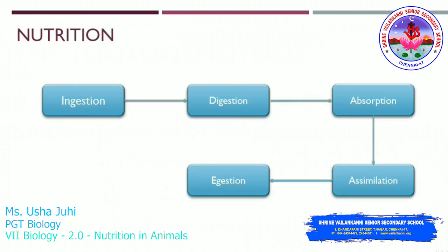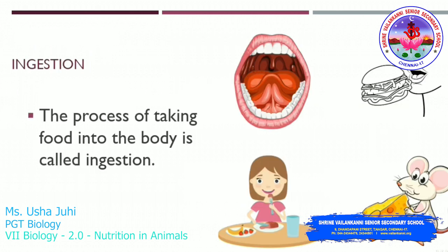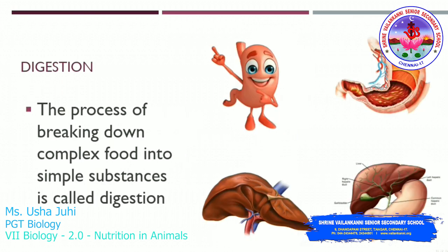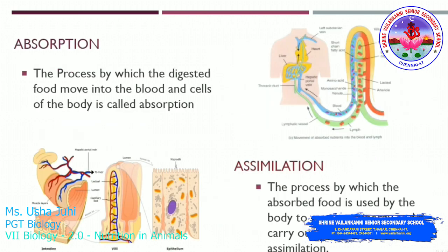Nutrition as a process can be classified into five divisions: first, ingestion; second, digestion; third, absorption; fourth, assimilation; fifth, egestion. Ingestion is the process of taking food into the body. Digestion is the process of breaking down complex food into simple substances.